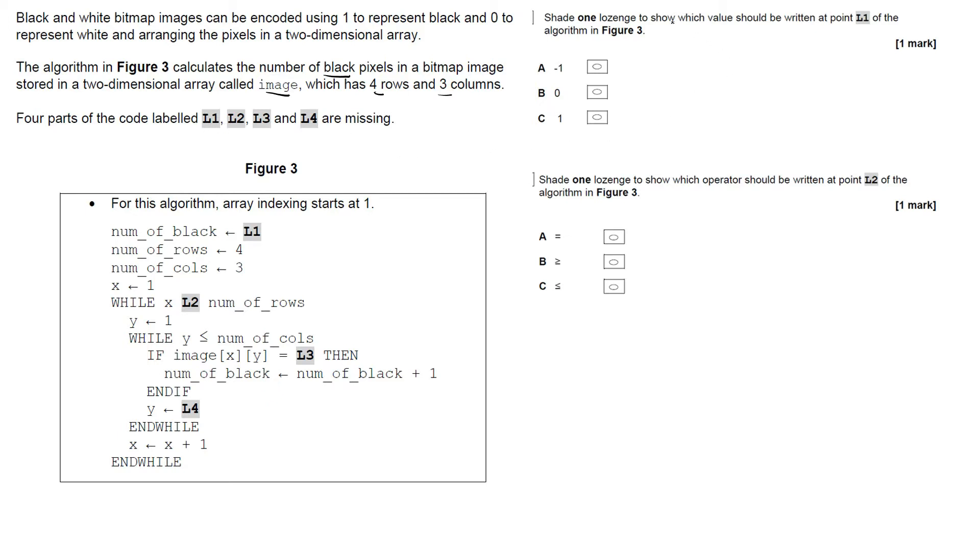It says shade one lozenge. We're using this technique where we're coloring it in, and if we get it wrong we do it like that and color the next one in. So shade one lozenge to show which value should be written at point L1 of the algorithm in Figure 3.